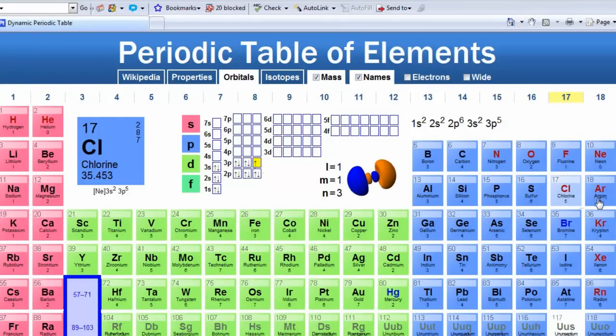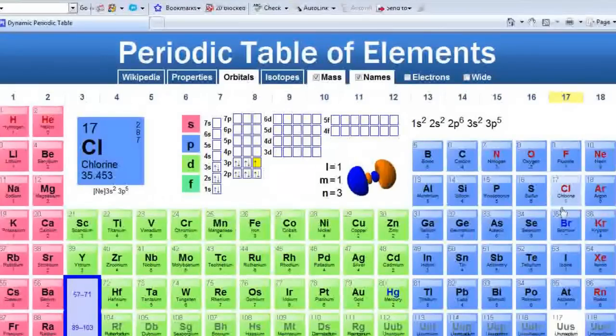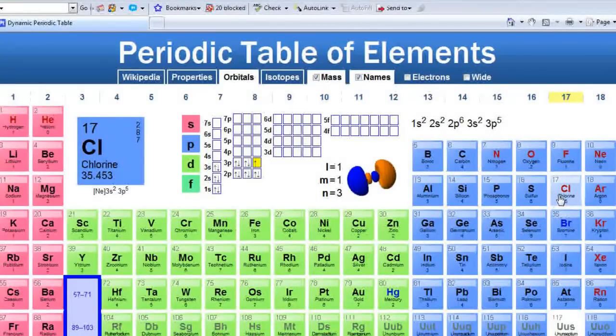That's what we mean when these main group elements will move in a horizontal way to the nearest noble gas when they form ions, when these main group atoms form ions.